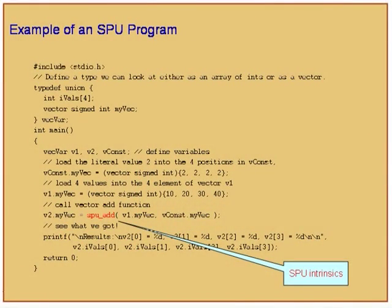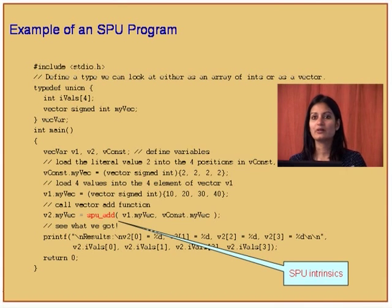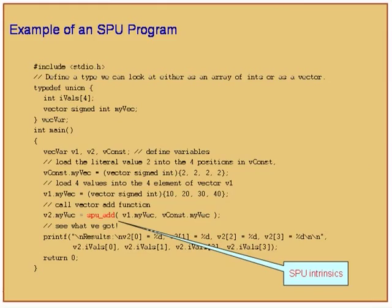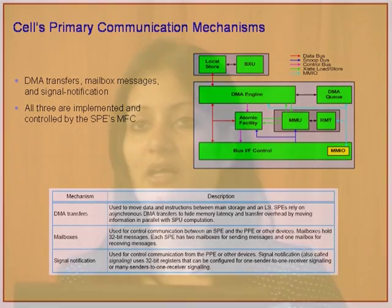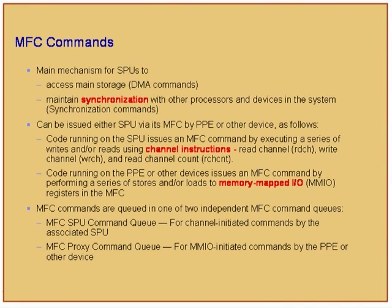An example SPU program: similar to the VMX example, define a union of four integer values and one vector unsigned / vector signed int. Define three vectors, initialize the first with four values, the second with four values. To add them, instead of vec_add, the SPU uses spu_add. There is a local store with the SPU processing unit, and a memory flow controller (MFC). The MFC consists of a DMA queue, a DMA engine (DMA controller), an atomic facility, and an RMT (replacement management table), plus memory-mapped I/O registers.